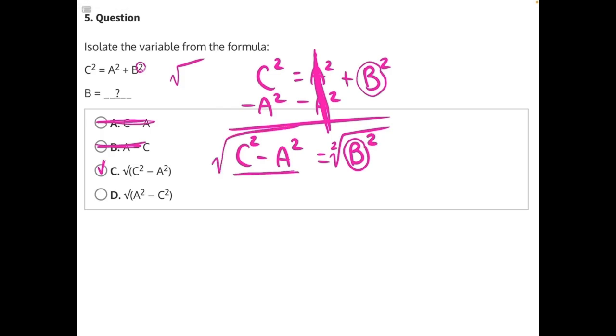And whatever we do to one side of the equal sign we always have to do to the other. So these radicals and exponents will cancel, leaving us with the square root of c squared minus a squared equals b, making C our correct answer.